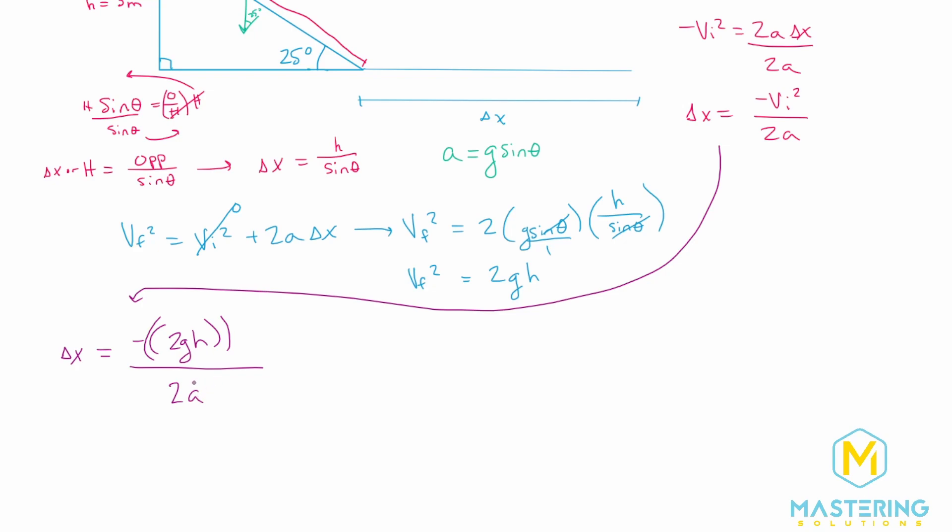But now the problem is we don't have the acceleration down here. So we need to solve for the acceleration. So we'll be using the force equation, of course, which is ma. And then we can divide both sides by the mass. So acceleration is equal to force divided by the mass.